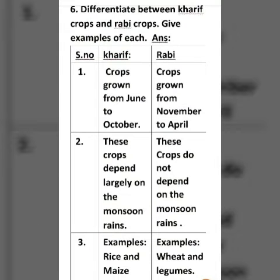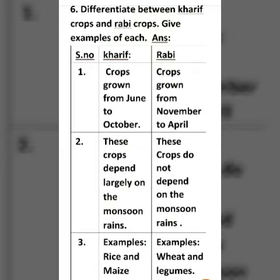6th question: Differentiate between Kharif crops and Rabi crops. Give examples of each. Answer: